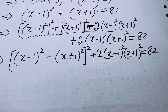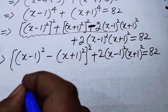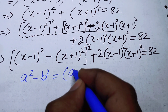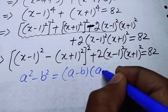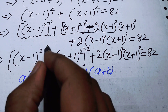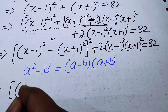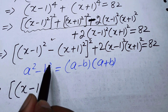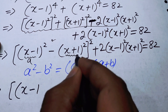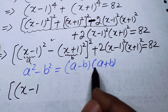We apply the famous identity: a² - b² = (a - b)(a + b). Here, a = (X-1)² and b = (X+1)², so we can substitute these values of a and b into the formula.